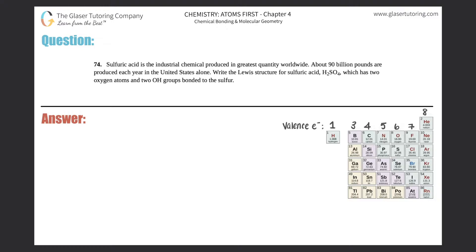Number 74. Sulfuric acid is the industrial chemical produced in greatest quantity worldwide. About 90 billion pounds are produced each year in the United States alone. Write the Lewis structure for sulfuric acid, which is H2SO4, which has two oxygen atoms and two OH groups bound to the sulfur.